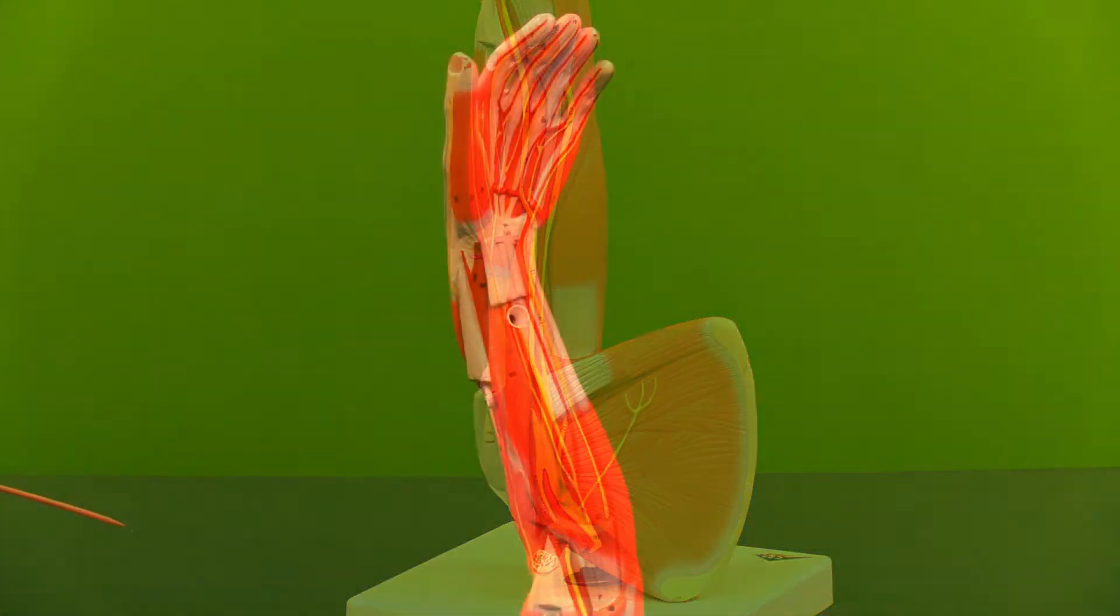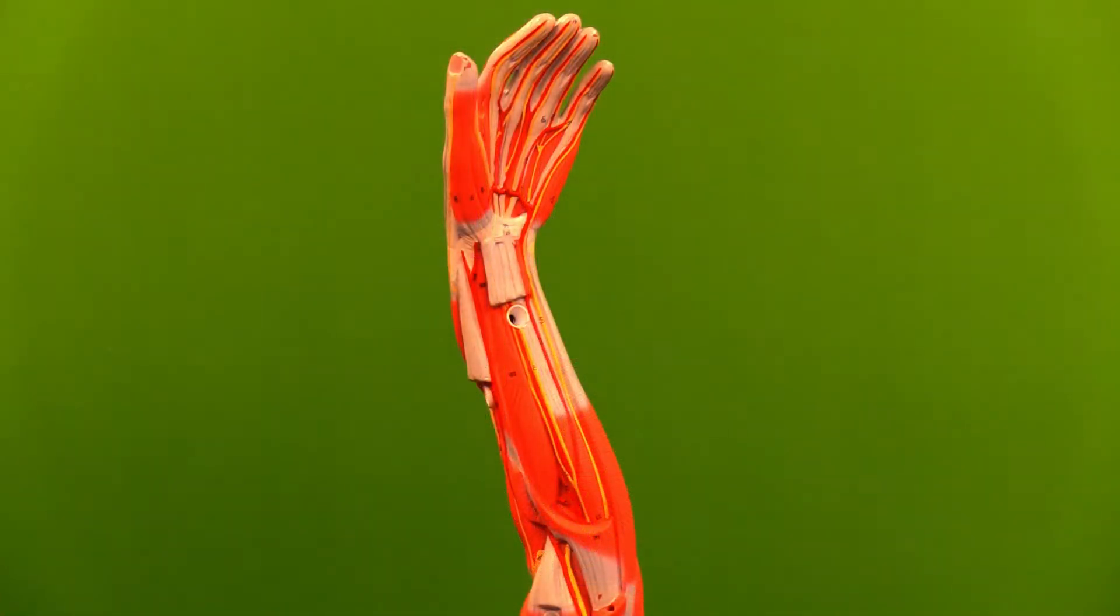Looking at the arteries in the antebrachium, we will start with a small artery coming out of this muscle known as the common interosseous artery. That is going to quickly branch into the posterior interosseous artery, going to the other side of the arm, and the anterior interosseous artery.